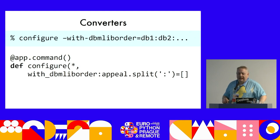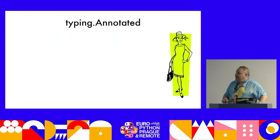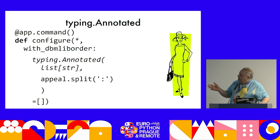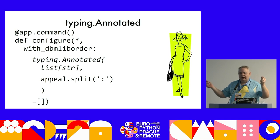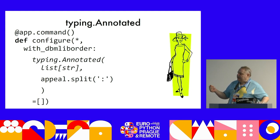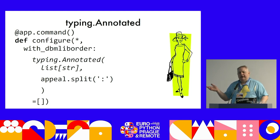Static type analyzers might not like non-type annotations. Appeal and static type analyzers can get along using typing.Annotated. You wrap your annotation with typing.Annotated: MyPy only ever looks at the first argument, while Appeal only ever looks at the last one. So you can use static typing and Appeal at the same time — they're perfectly happy to coexist.